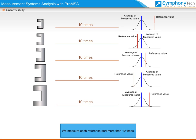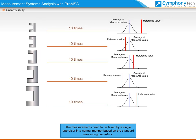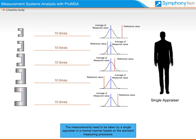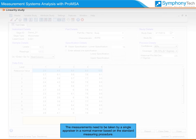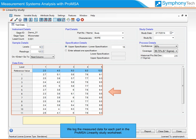We measure each reference part more than 10 times. The measurements need to be taken by a single appraiser in a normal manner based on the standard measuring procedure. We log the measured data for each part in the Pro-MSA linearity study worksheet.